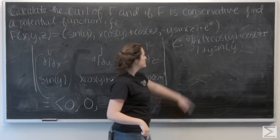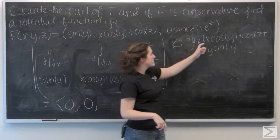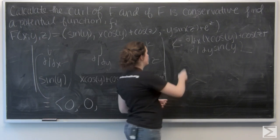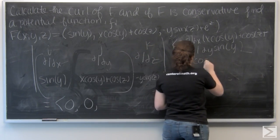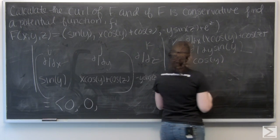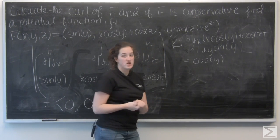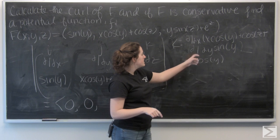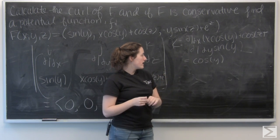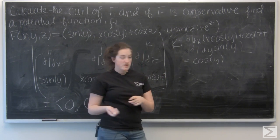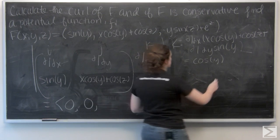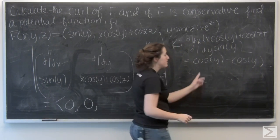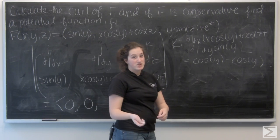So let's go ahead and do the first component. The derivative with respect to x of x cosine y is going to be cosine y. And then cosine z is treated like a constant, so its derivative with respect to x is zero. Now ddy of sine of y is going to be cosine y. So cosine y minus cosine y — my k component is actually zero.